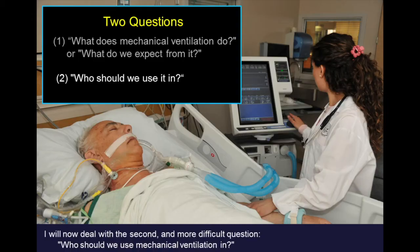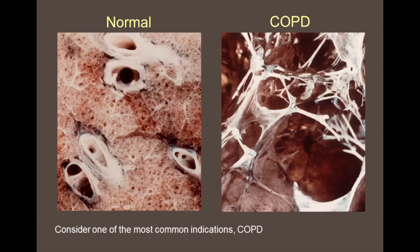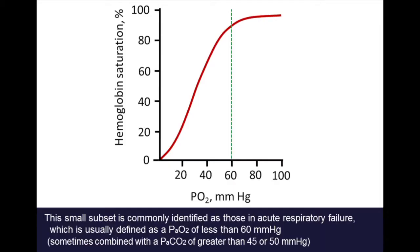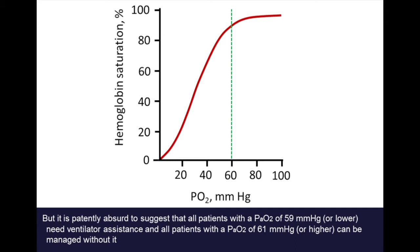I will now deal with the second and more difficult question: who should we use mechanical ventilation in? Consider one of the most common indications — chronic obstructive pulmonary disease. At any one point in time, much less than 1% of patients with COPD are receiving mechanical ventilation. This small subset is commonly identified as those in acute respiratory failure, usually defined as a PO2 of less than 60, sometimes combined with a PCO2 of greater than 45 or 50. But it is patently absurd to suggest that all patients with a PO2 of 59 or lower need ventilator assistance and all patients with a PO2 of 61 or higher can be managed without mechanical ventilation.